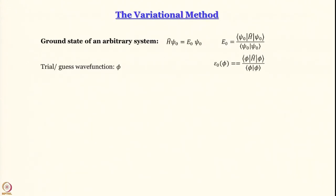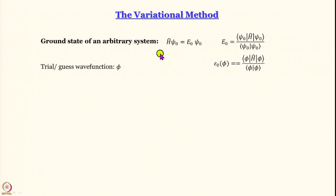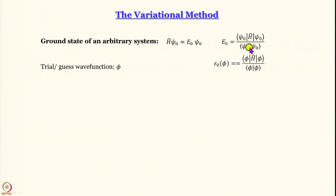The variational method tries to develop a description of the ground state of an arbitrary system — a system for which the Schrödinger equation cannot be solved exactly, but you can write the Hamiltonian. We write H·ψ₀ = E·ψ₀, and the expectation value of ground state energy is the integral ψ₀* H ψ₀ over all function space, divided by the normalization integral, which equals 1 for normalized wave functions. We start with a trial wave function.